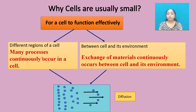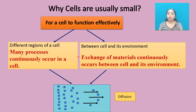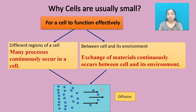Effective communication between different regions of the cell is important because there are many processes which continuously occur in a cell, like synthesis of proteins and synthesis of organelles. Effective communication between the cell and its environment is also important because exchange of materials continuously occurs between the cell and its environment. All these processes require diffusion at some point. Diffusion is the movement of substances from higher concentration to lower concentration.